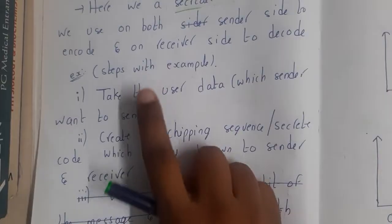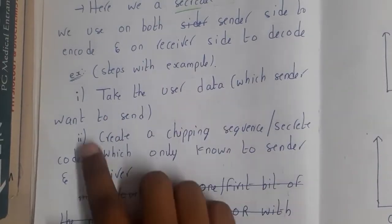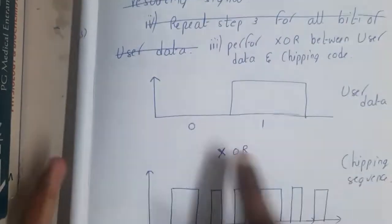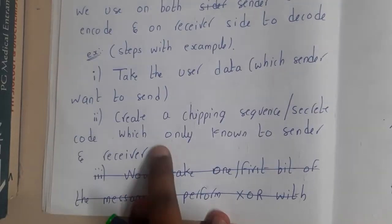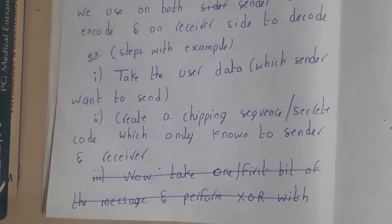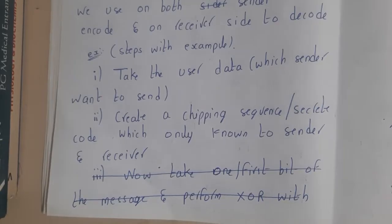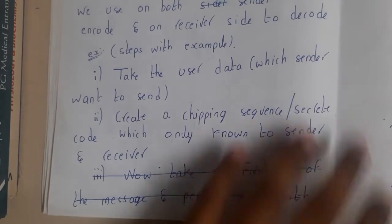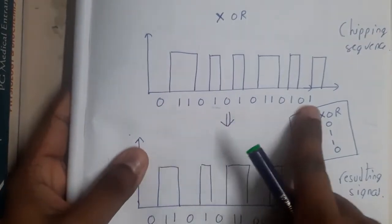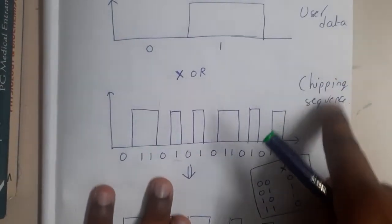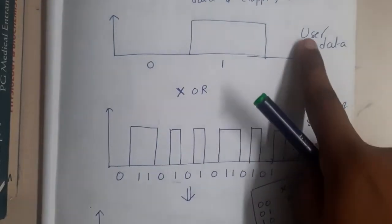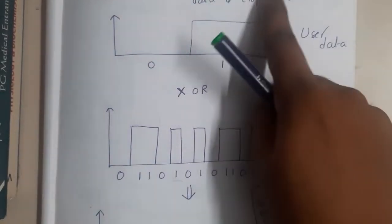The first step is to take the user data which the sender wants to send. Here the user wants to send 0 1, that's it - simple. Next, create a chipping sequence or secret code which is only known to you and the sender. Create a code and inform your friend prior that this will be your code. This code is a bit lengthy, but it will be really easy to understand, don't worry.